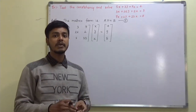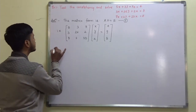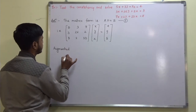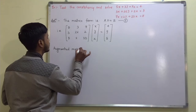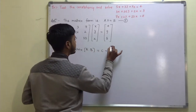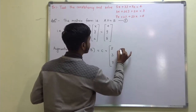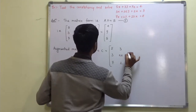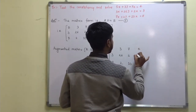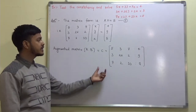What is the second thing? You have to find out the rank of the coefficient matrix and the rank of the augmented matrix. So write down the augmented matrix first and then find the rank. The augmented matrix A augmented B, which we generally denote by C, is equal to [5, 3, 7, 4; 3, 26, 2, 9; 7, 2, 10, 5].